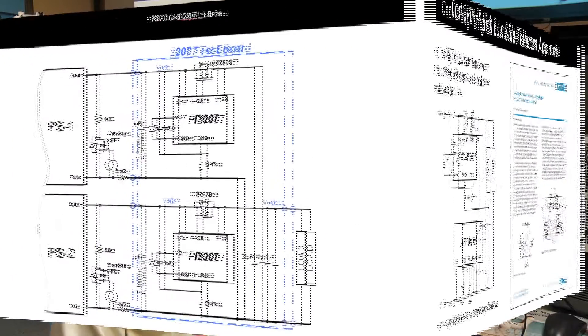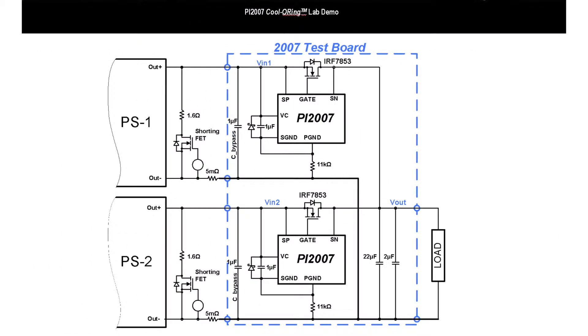The setup is two converters and a Cool Oring demo board. We'll simulate a converter output short on the demo board with a shorting FET, and then we'll show the voltage bus on a single shot on the scope.